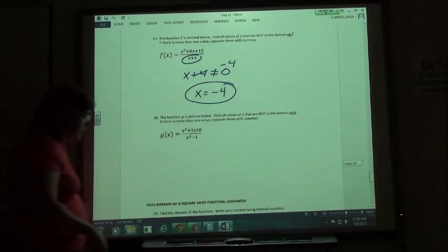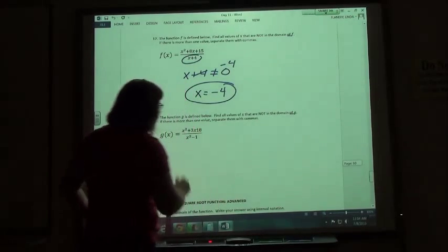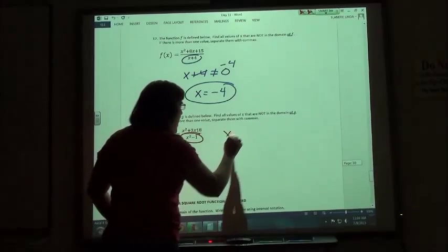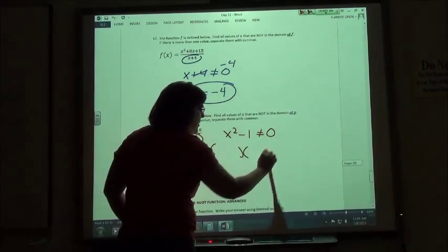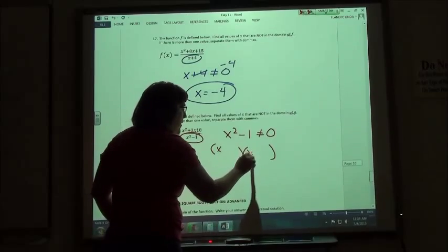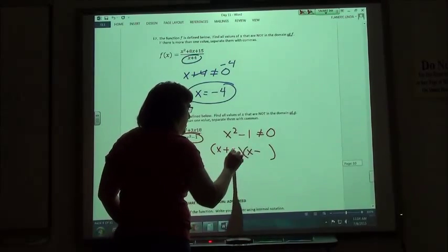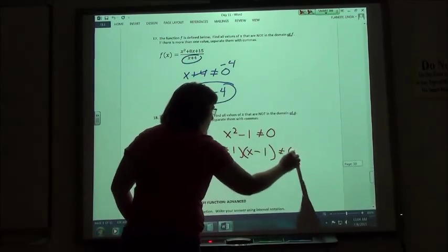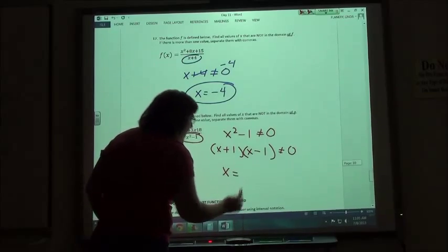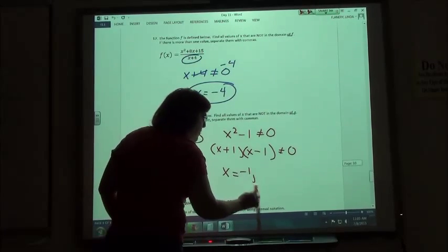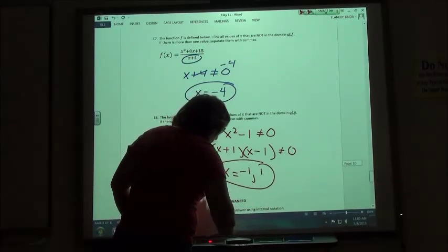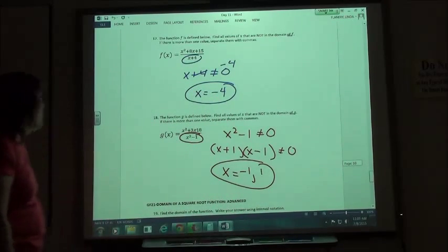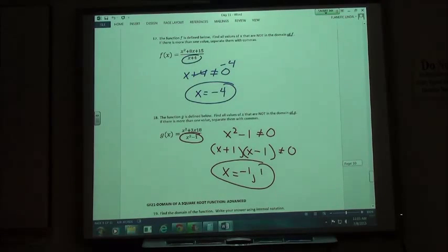And number 18, same kind of thing. I've got a fraction, and I know the denominator x² - 1 cannot equal zero. If I factor that out, I get (x-1)(x+1). So x can't equal negative 1, which would give me zero here, or positive 1, which would give me zero here. So negative 1 and positive 1 are the values that are not in my domain.